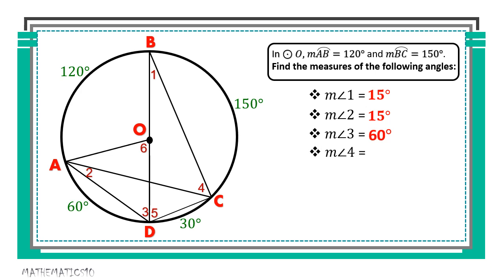For angle 4, angle 4 is the same as angle ACB and is also an inscribed angle. It so happens that the intercepted arc of angle 4 is the same as the intercepted arc of angle 3. Therefore, we apply theorem 99 — inscribed angles in the same arc theorem — which states that angles with the same intercepted arc are congruent. So angle 4 also measures 60 degrees — half of its intercepted arc of 120 degrees, same as angle 3.